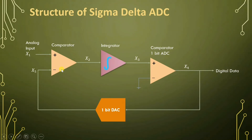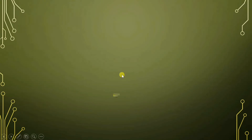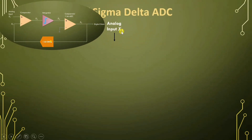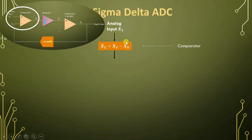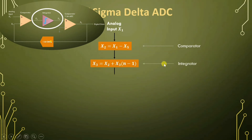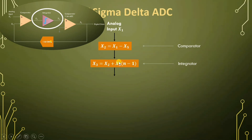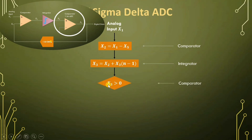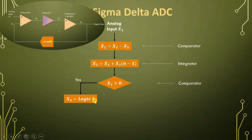One can easily understand the working based on the flowchart. In this flowchart, X1 is our input analog voltage. In the first comparator, X2 is the difference between X1 and the feedback X5, so X2 equals X1 minus X5, where X5 can be plus 1 or minus 1 based on the feedback digital data. After that, we give the signal to the integrator, which performs X2 plus the previous data of X3. We then check whether X3 is positive or negative — if positive, the digital output X4 is logic 1.